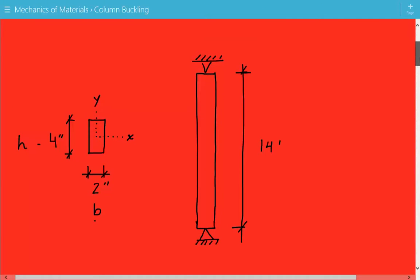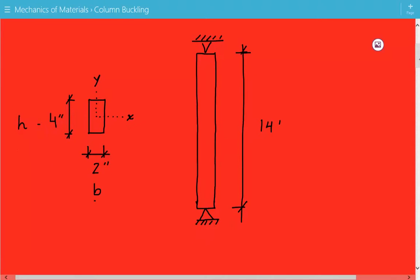Here's our wooden rectangular column. It has an unbraced length equal to 14 feet pinned at both ends. The cross section is shown here to the left. It's 2 inches by 4 inches. The 2 inch dimension we label as b, and the 4 inch dimension we label as h. And here's the x and y axis for the local axes for the cross section.